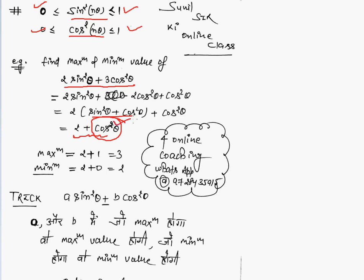The maximum of cos²θ is 1, so the maximum value is 3. For the minimum: the minimum of cos²θ is 0, so this minimum is 2. But in exams we can't solve this way because the competition level is so high.